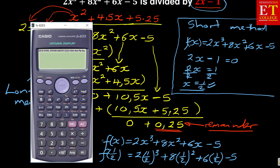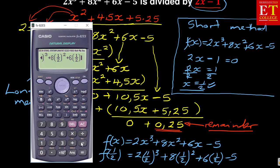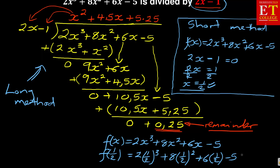So what do I have? I've got 2 multiplying (1 over 2) cubed, plus 8 multiplying (1 over 2) squared, plus 6 multiplying (1 over 2), and then minus 5. If you simplify that, it gives 1 over 4, which is equal to 0.25.